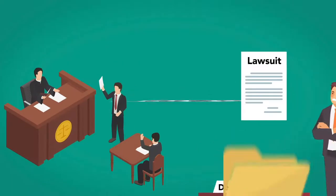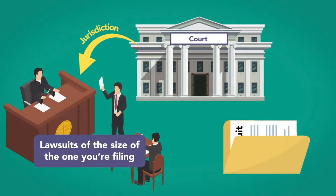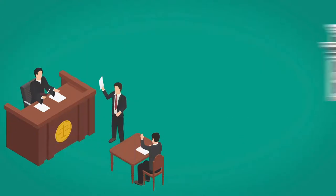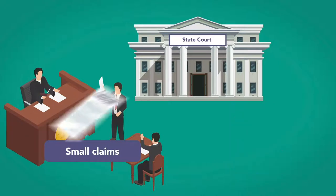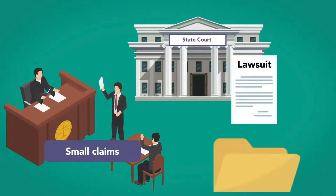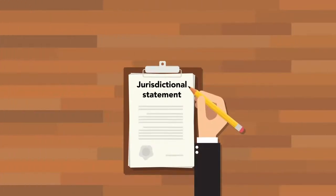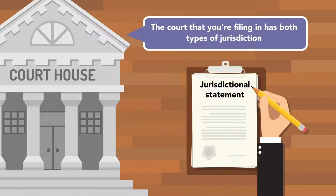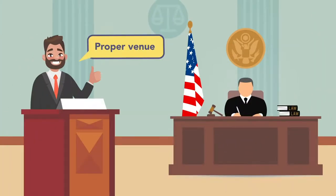You also need to file the lawsuit in the court that has jurisdiction over lawsuits of the size of the one you're filing. Many state courts have small claims with jurisdiction up to a certain amount, such as $10,000 or $25,000. You might file in small claims court, for example, since the amount in controversy here is small. After that's settled, you construct a jurisdictional statement that would state that the court you're filing in has both types of jurisdiction, and that the court is the proper venue to try the case.